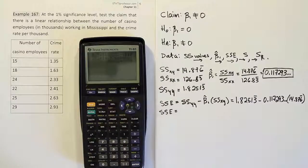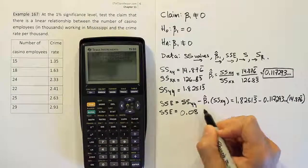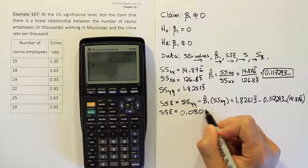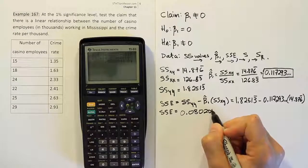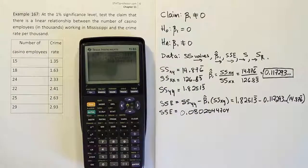SSE will basically be equal to 1.82513 repeating minus 0.117293 times 14.876 repeating. All that's entered in our calculator. We got the answer finally, 0.0802044704. So that's the whole long thing, the full SSE.